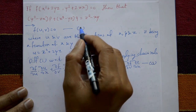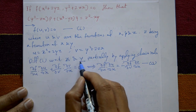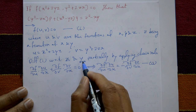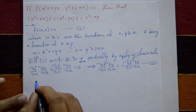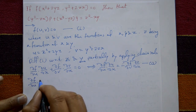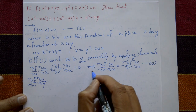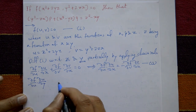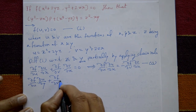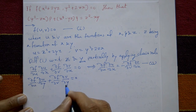Next, again differentiate equation one with respect to y partially by applying the chain rule: ∂f/∂u · ∂u/∂y + ∂f/∂φ · ∂φ/∂y = 0. Call this equation number three.